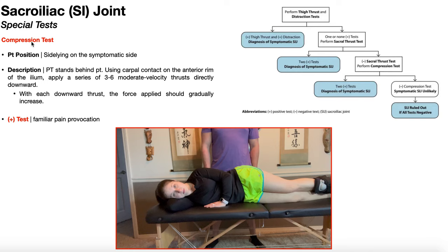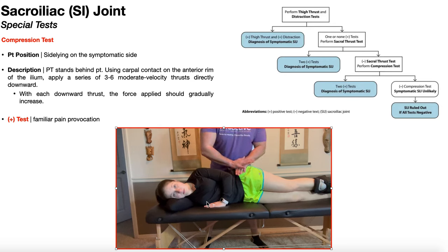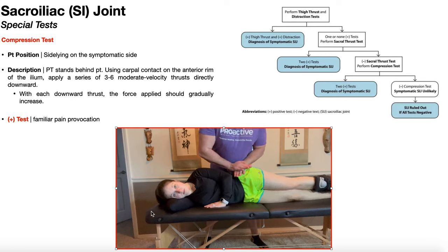The fourth and final special test of the cluster of Laslett is the compression test, performed with the patient in sidelying on their symptomatic side. The PT stands behind the patient and uses carpal contact — a flat hand — on the anterior rim of the ilium. Apply three to six moderate velocity thrusts directly downward, pushing one ilium into the sacrum, which is then pushed into the other ilium, compressing both SI joints, especially on the symptomatic side. Force should gradually increase with each thrust.